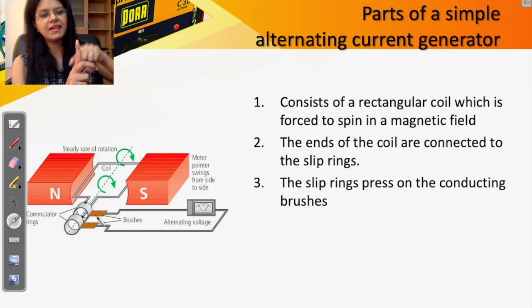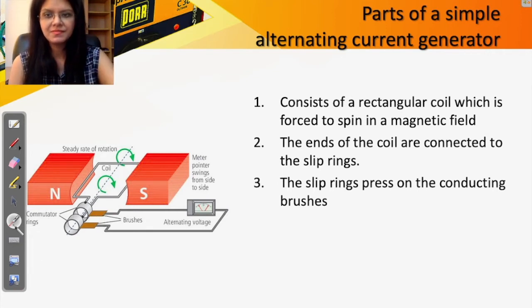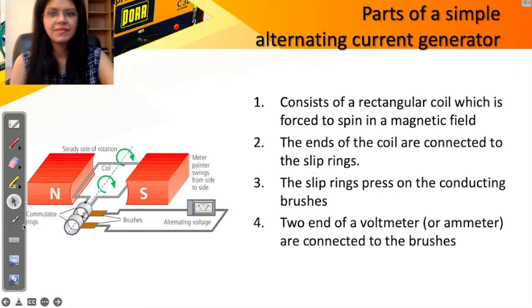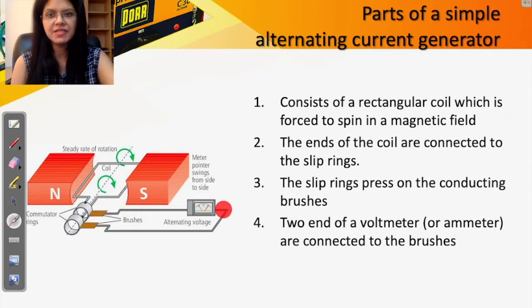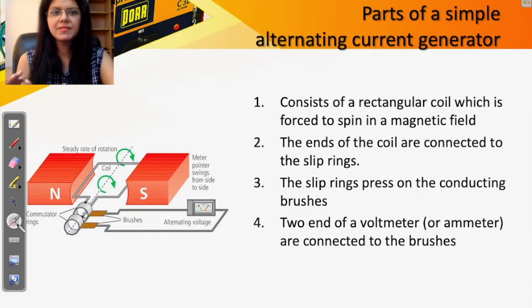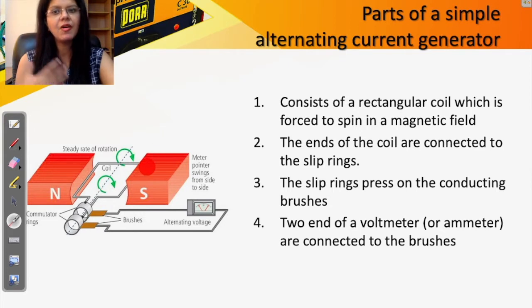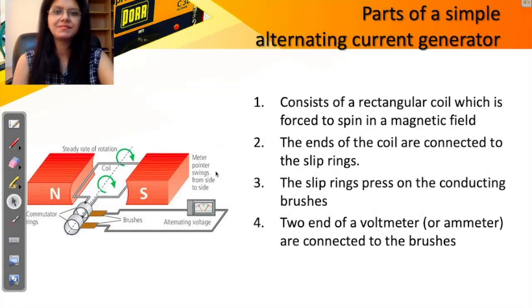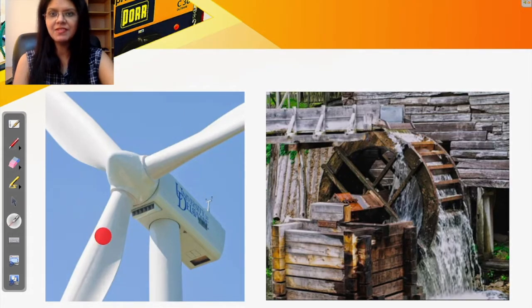Through the brushes, the two ends of the voltmeter are connected. You can use a voltmeter or an ammeter — both help you determine if current is flowing in the loop of wire. These are, in simple terms, the parts of your alternating current generator. The red blocks you see here are the magnets.